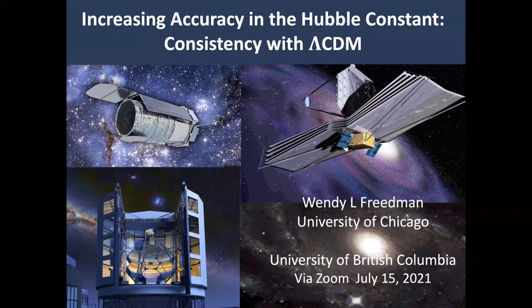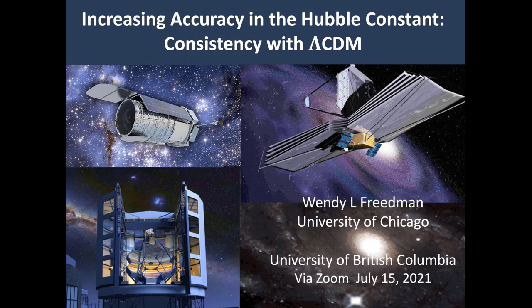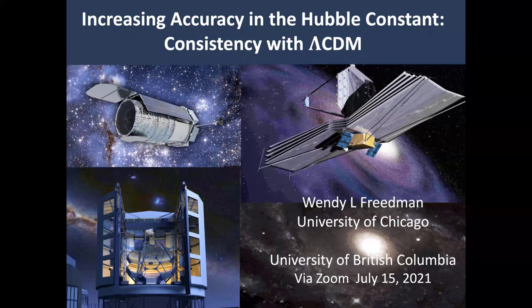Thank you, Douglas. It's a pleasure to be talking to you today. I only wish I were there in person because I have a lot of friends in the audience and it's always good to get back to Canada. I think you probably invited me to talk about the Hubble tension, and I changed my title — perhaps it's a bit provocative. I've been looking very closely at the calibration of two methods: the tip of the red giant branch and Cepheid calibrations of the Hubble constant, and just posted a paper a couple of weeks ago comparing the strengths and weaknesses of each.